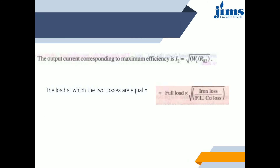So when copper loss equals iron loss, the efficiency is maximum for a single phase transformer. The output current corresponding to maximum efficiency is I2 = √(WI / R02). The load at which the two losses are equal — i.e., the load corresponding to maximum efficiency — equals full load × √(iron loss / full load copper loss). Power transformers used for bulk power transmission operate continuously near full load and are therefore designed to have maximum efficiency at full load. Distribution transformers, which supply varying loads through a wide range over the day, are designed to have maximum efficiency at about 3/4 of full load.